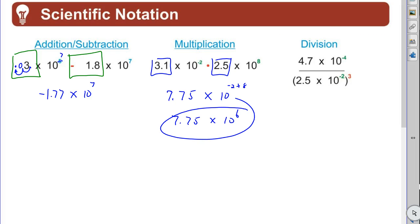Alright, how about division? So I threw a couple things in here. Not only do we have division, we have an exponent of a 3 on the bottom. So remember, this 3 gets applied to the 2.5, so it's 2.5 cubed. Let me do that: 2.5 cubed, and that's 15.625. So you got 4.7 on top, 15.625 on the bottom, and 10 to the negative 2 times a 3 is a negative 6, times 10 to the negative 4 on the top.